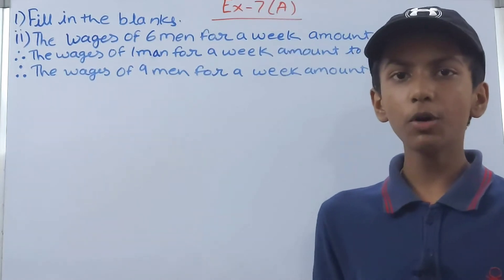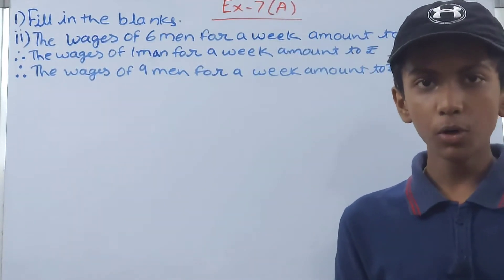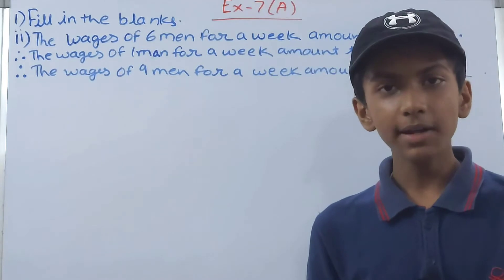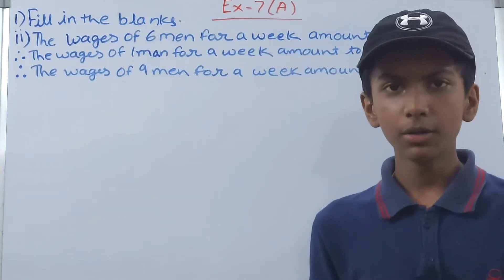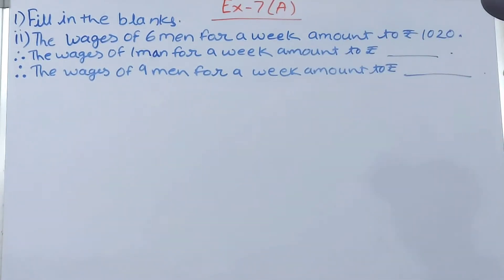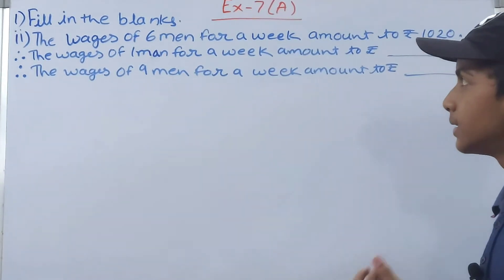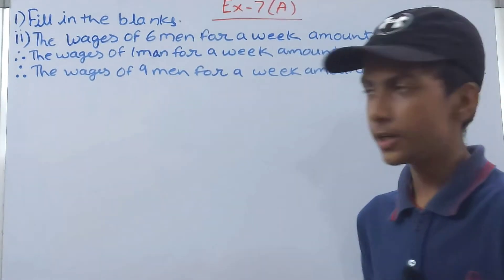You see here that 6 men, it's rupees 1020. So 6 men equals rupees 1020. So one man will basically be having a wage of how many rupees? So simply divide it because we know that this question is of direct variation.